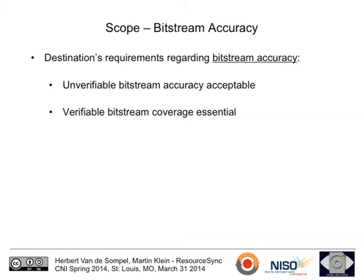Bitstream accuracy is another dimension. In a digital preservation use case, the destination really wants to know it collected the accurate bitstream — so we're talking about content-based hashes. In the discovery scenario, it doesn't matter as much. Those are different types of requirements, and our framework is designed to accommodate all of them.